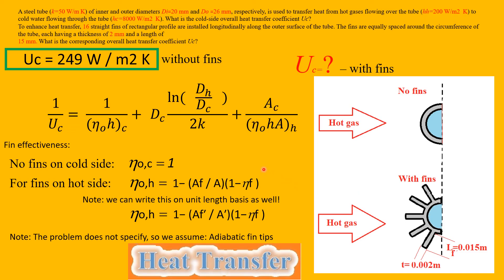Now we're going to go back to the beginning and start all over again and find the Uc for the second scenario where the tube has a bunch of fins on them. By a bunch I mean 16, they told us right here 16 straight fins.